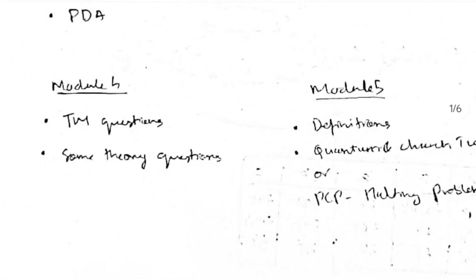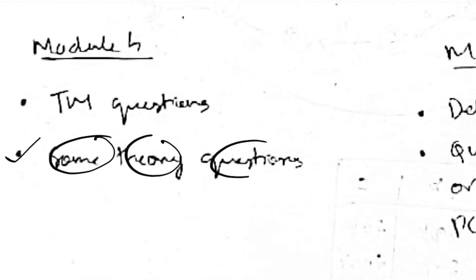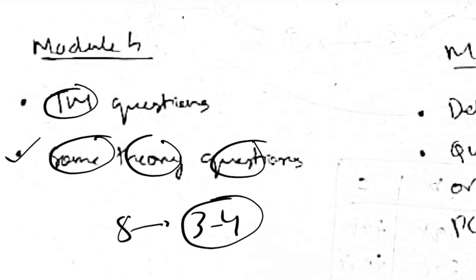The next easiest module is Module 4. There are some theorems and theory questions you can memorize very easily, and there are Turing Machine questions. Out of about eight questions, only three or four are the most repeated ones. If you know the basic idea of how to solve a Turing Machine — watch my explanation on that — solve it on your own two or three times. Most probably they'll give those repeated questions, as they have been repeated many times.